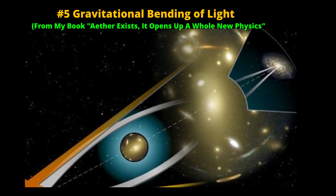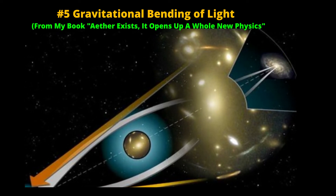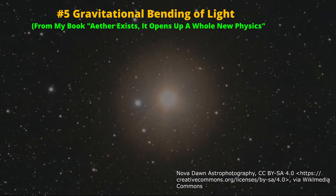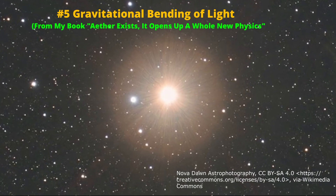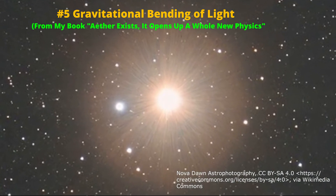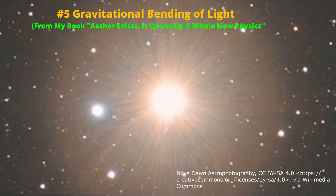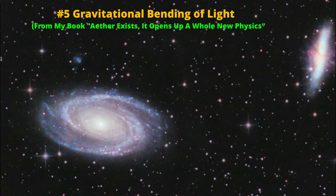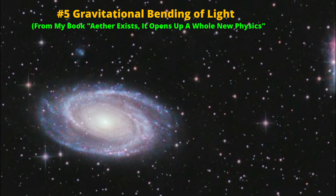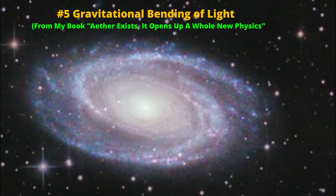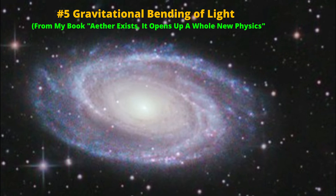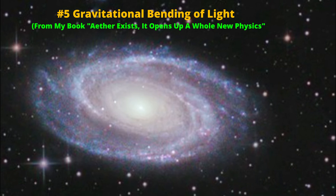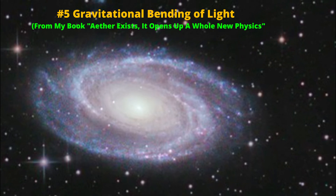As light passes through regions of different optical densities, it is refracted and bent. In reality, phenomena such as starlight bending and gravitational lensing are simply the refraction of light through dense ether regions. As light approaches a massive body, it experiences a slowdown, which is highest at the point closest to the body. This implies that the speed of light is not a universal constant but varies with local ether density, indicating the limitations of the constant c commonly used in modern physics calculations.